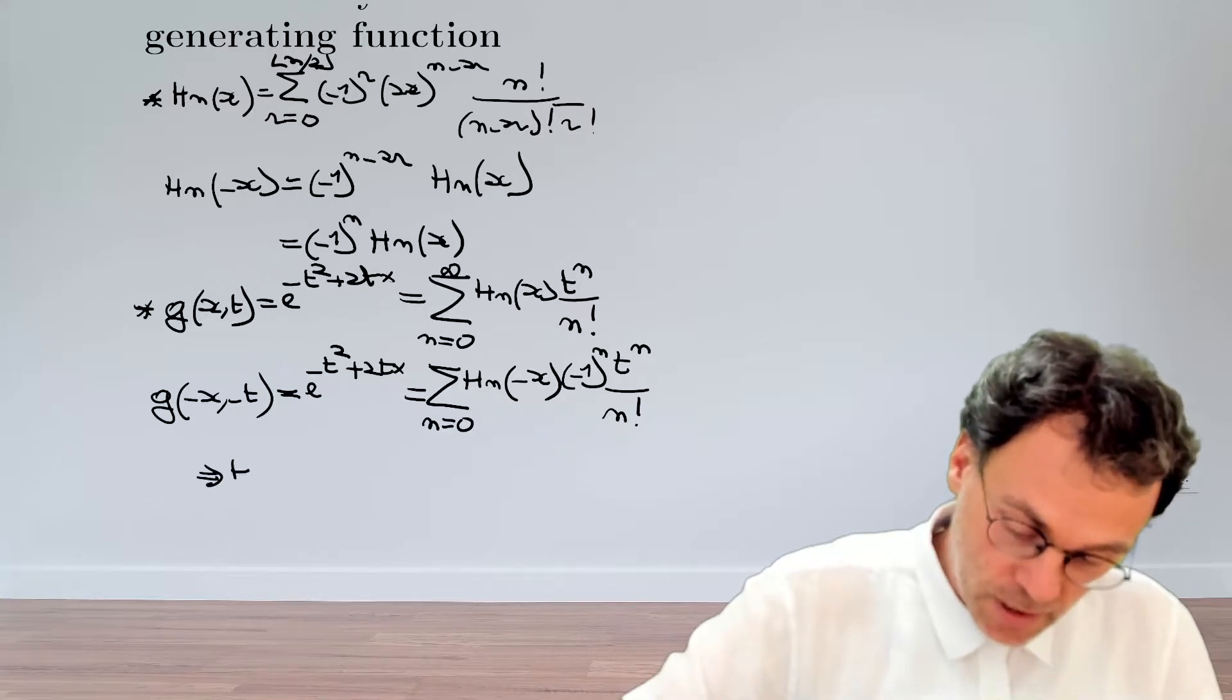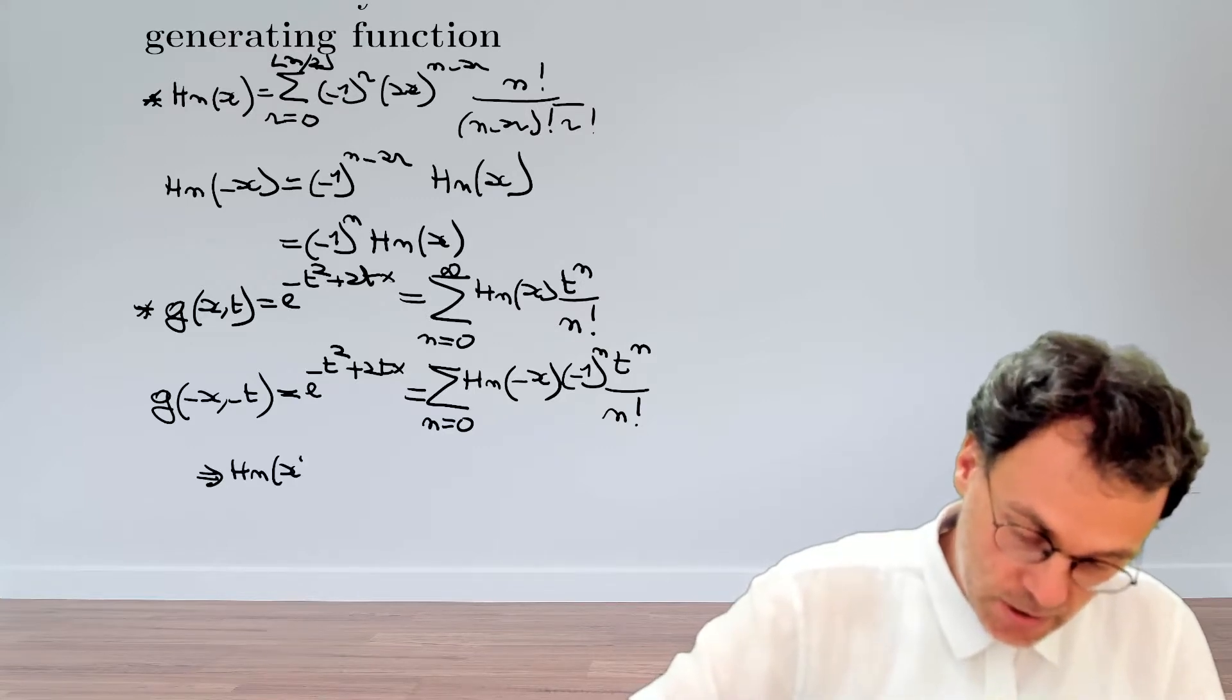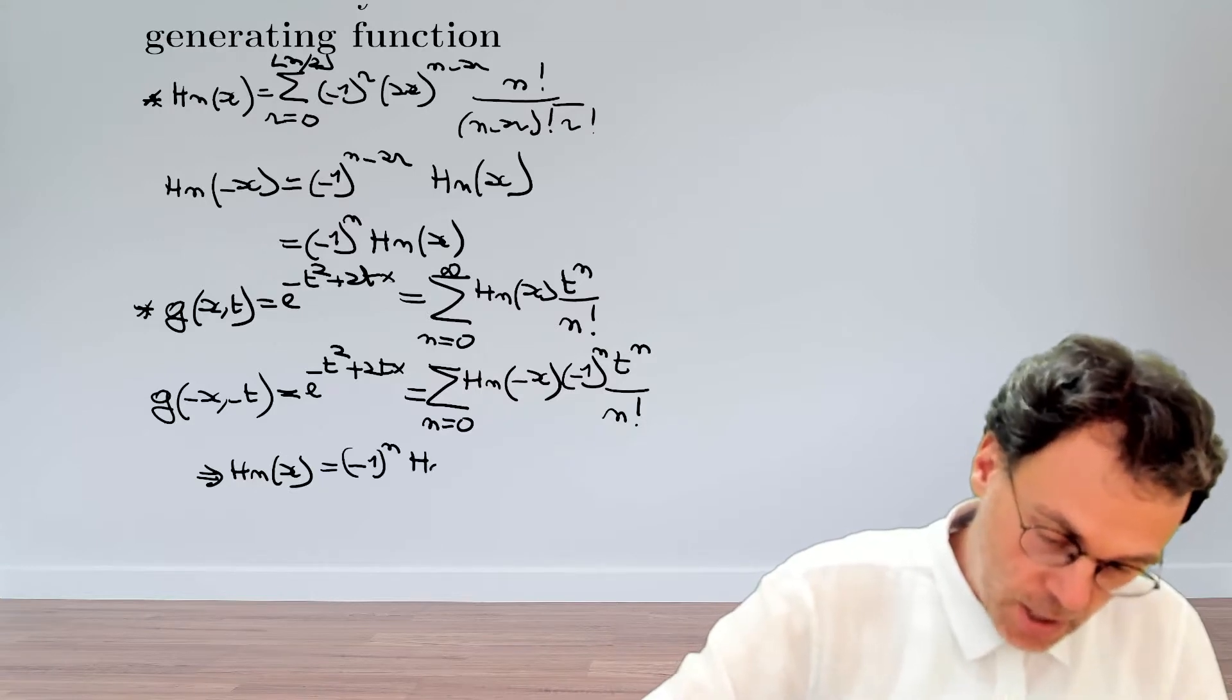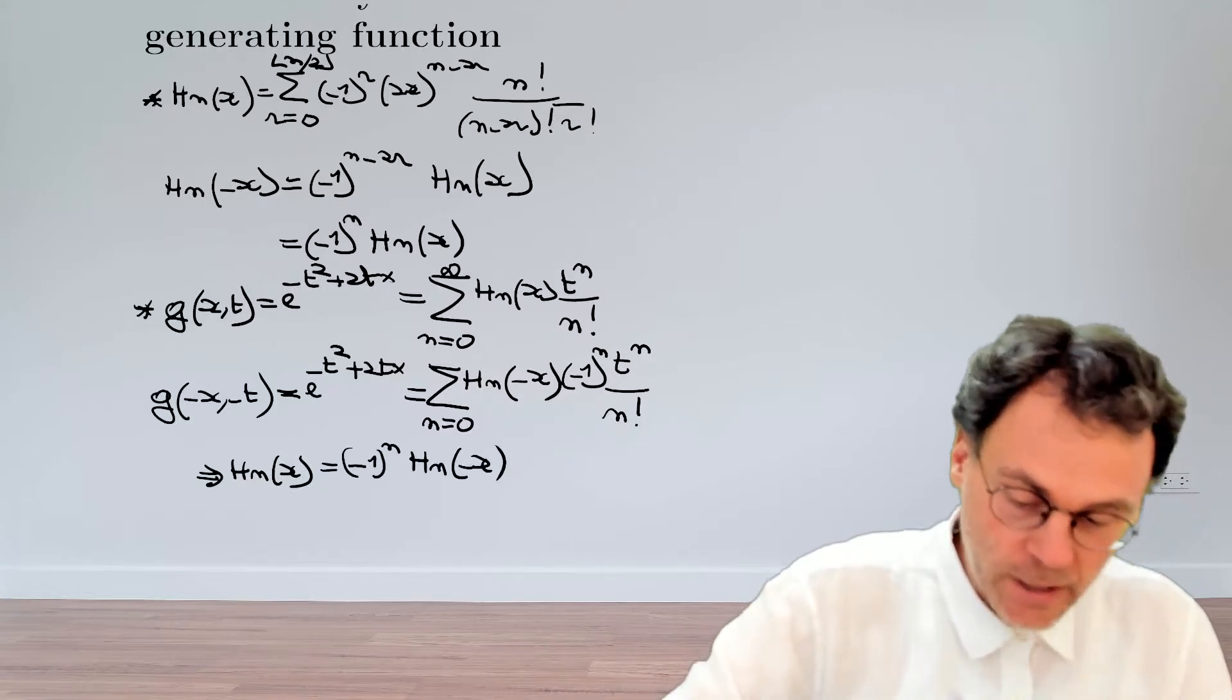So from that, we can immediately derive again that H_n of x is equal to minus 1 to the power n times H_n of minus x.